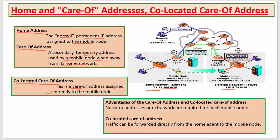The advantage of co-located care-of address: because of heavy traffic on the foreign agent, messages are directly forwarded to the mobile node. So the advantage is that the mobile is directly connected to the home network. That is all about home address, care-of address, and co-located care-of address. Thank you.